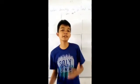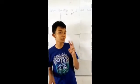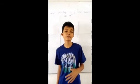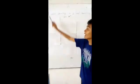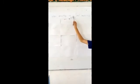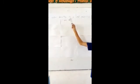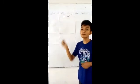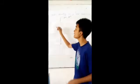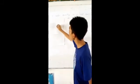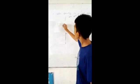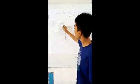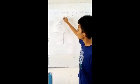Combined variation includes both indirect and direct variation. So this is an example of combined variation: X varies directly as Y and inversely as Z. The formula for this is X equals K times Y over Z, where K stands for the constant.